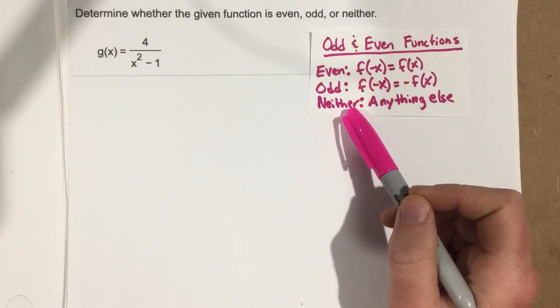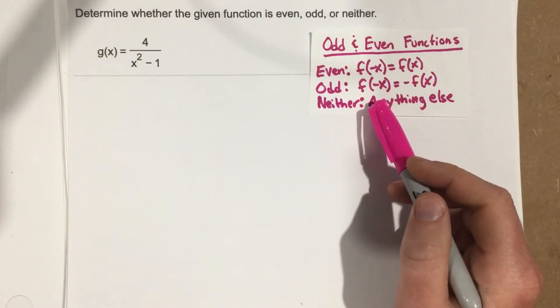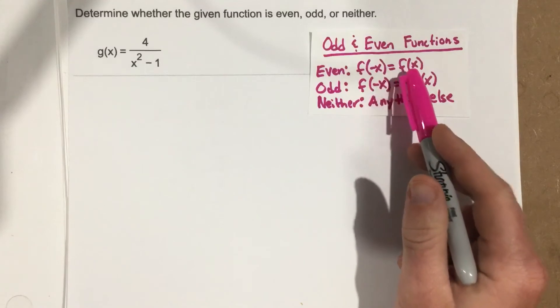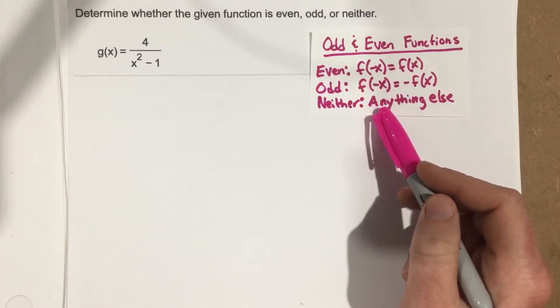And then neither happens when you plug in negative x, and something else happens other than these two things. So maybe it changes part of the function, but it doesn't change all the function.